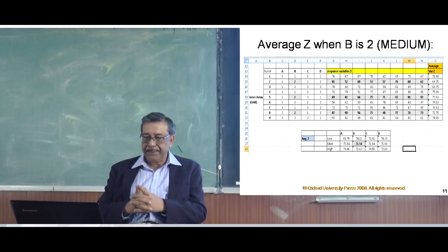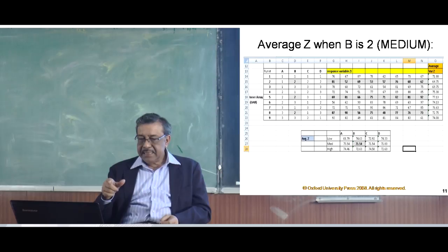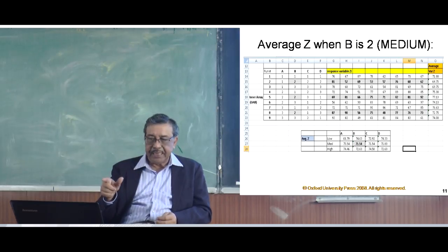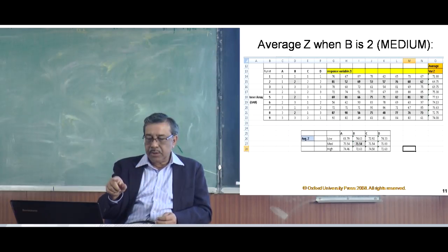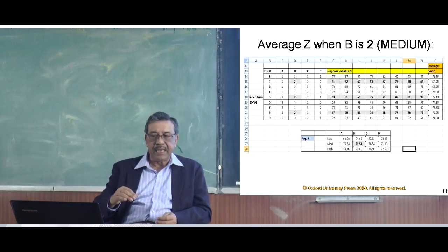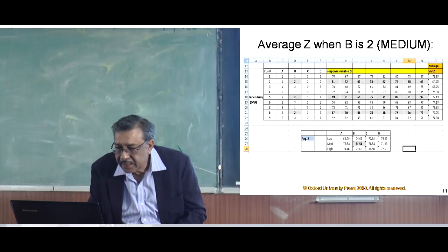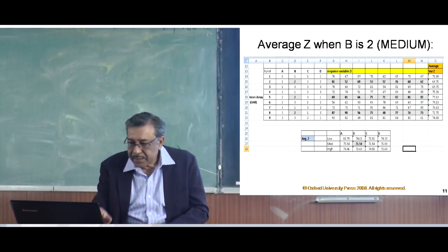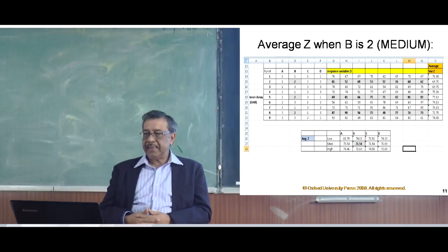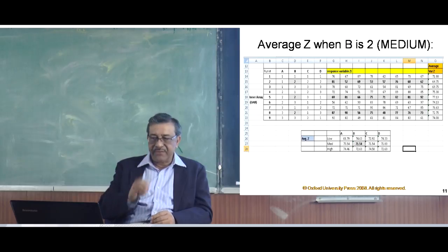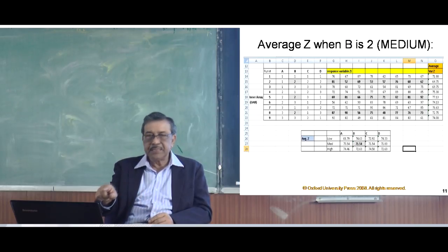Now we are evaluating what happens when b is medium. You can see 71.54 is the number. How are we getting that number? By averaging out the shaded portion. The shaded portion is selected based on when b is 2, and 2 is medium. When b is 2, there are 3 rows being averaged: G15 to N15, G18 to N18, and G21 to N21. All these shaded numbers averaged give 71.54 for the cell where b is medium.